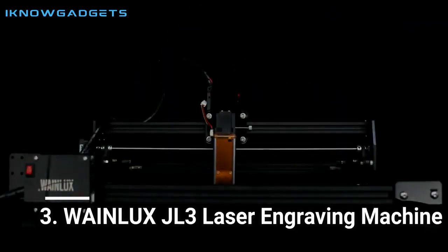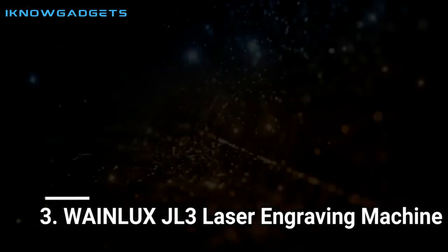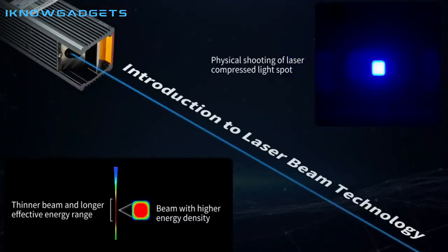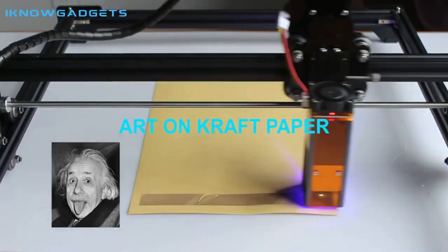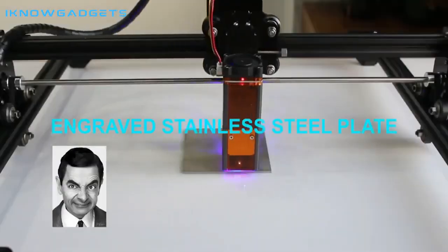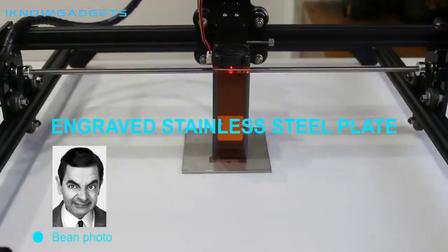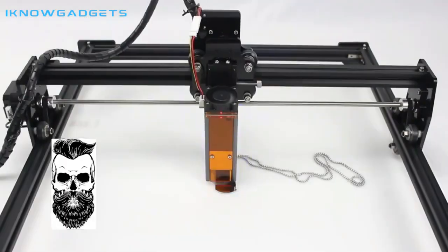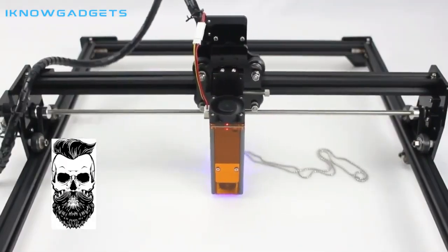Number 3. Wainlux JL-3 Laser Engraving Machine. The Wainlux JL-3 Laser Engraving Machine is a powerful, precise, and versatile tool for any project. It features a 40W fixed-focus laser module, upgraded firmware, and optimized motion algorithm, as well as compatibility with a wide variety of software.